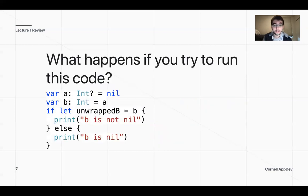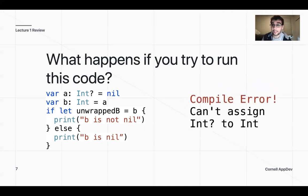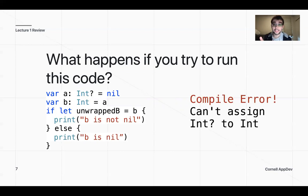Let's take a look at another case. We have a nil optional integer. We're setting B equal to that integer, unwrapping B, and printing B whether or not it's nil. You're actually going to get a compile error, because you can't assign an optional value to an Int. If you have an optional Int, you can set it equal to 5, but you can't set an Int equal to nil — only optional values can be nil.